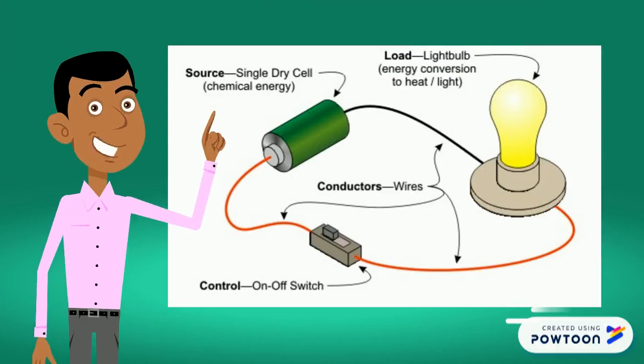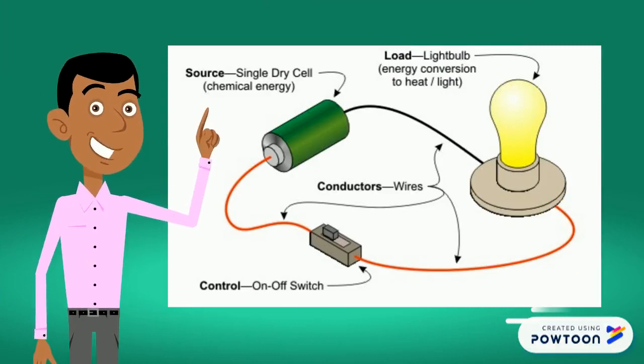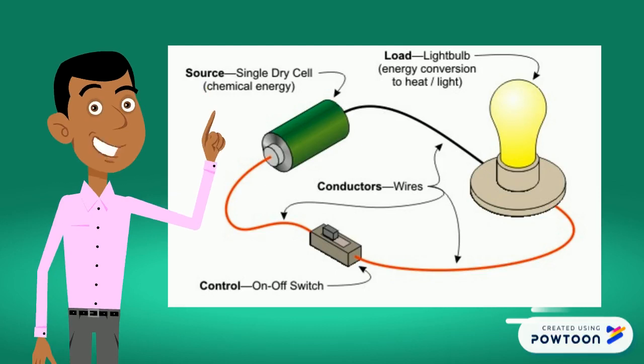An electric circuit is a closed path where electrons flow. It basically includes a device that gives energy to the electrons constituting the current, devices that use current, and the connecting wires.